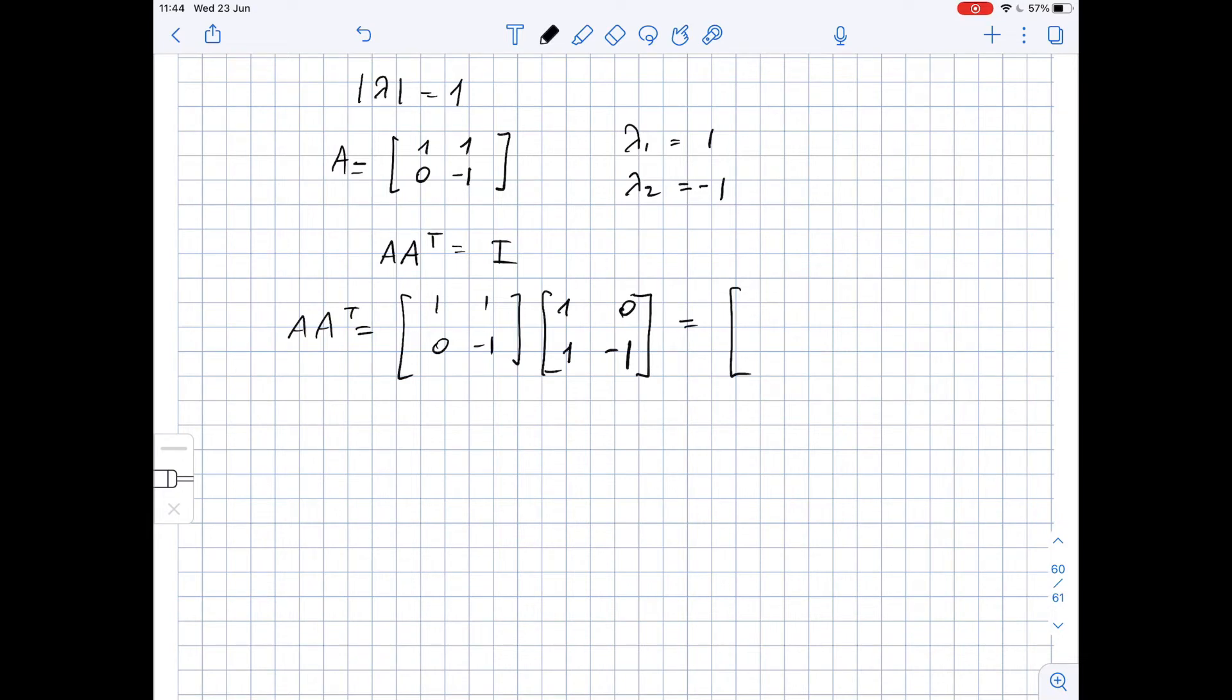We find the dot product of the first row and first column, which is 1 plus 1. Then we find the dot product of the first row and second column, which is 0 minus 1, so negative 1.